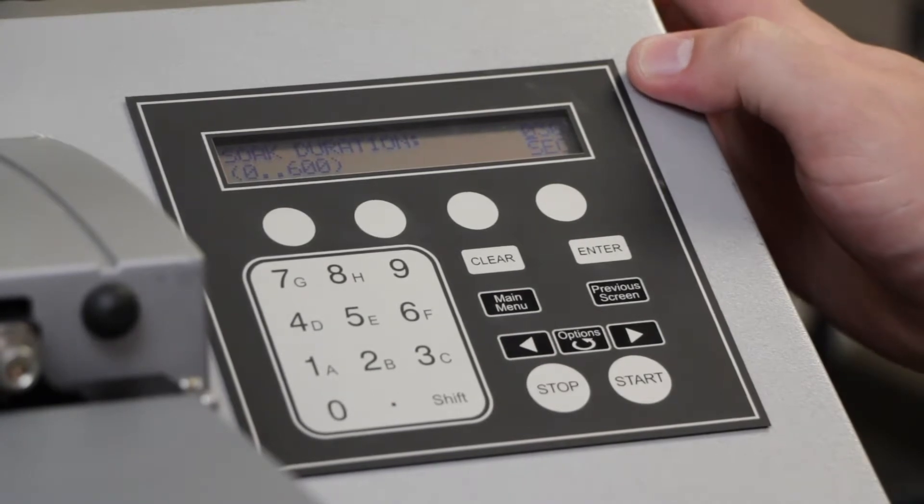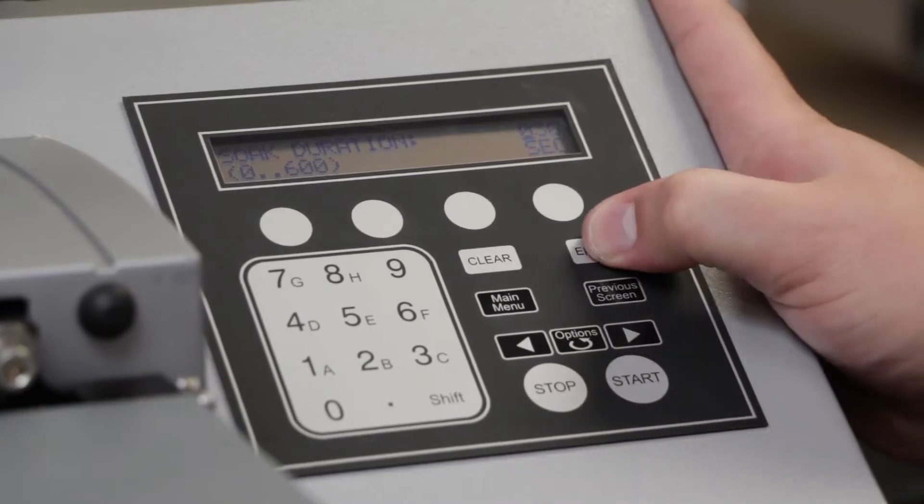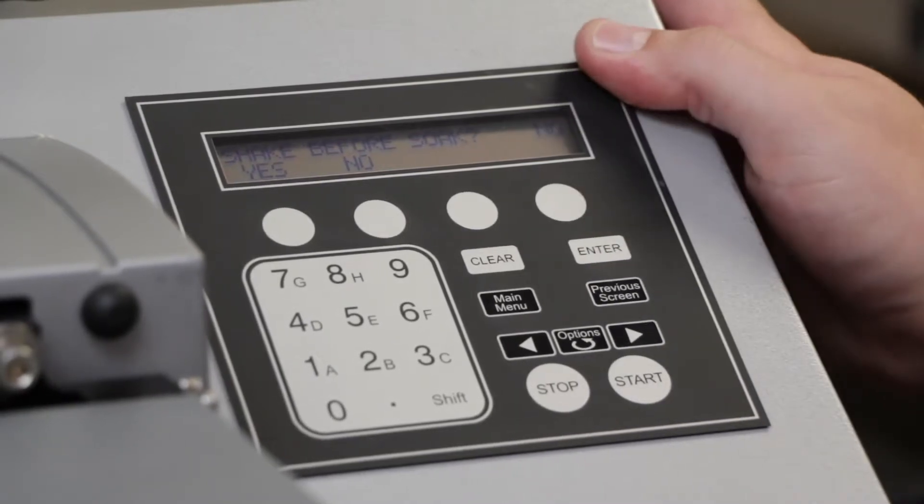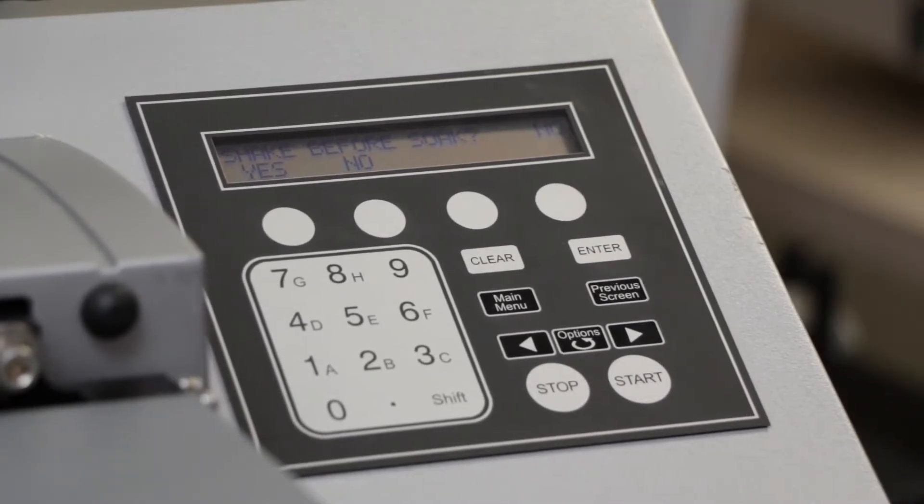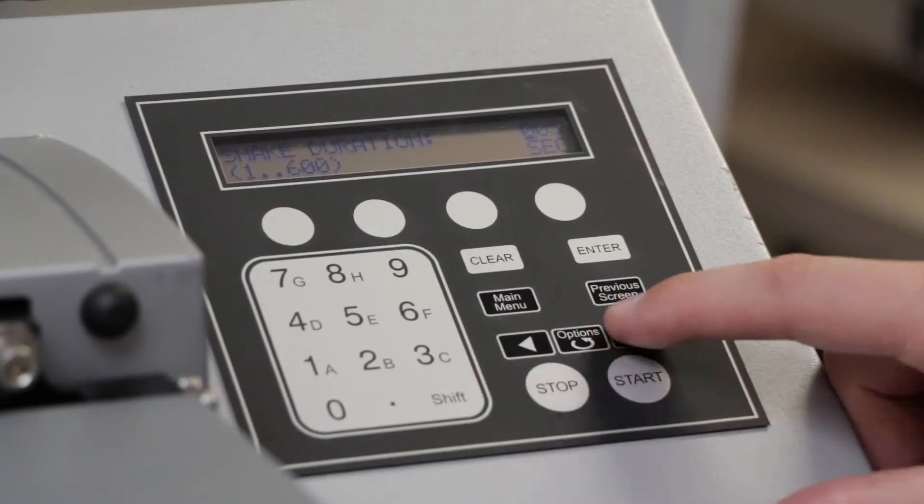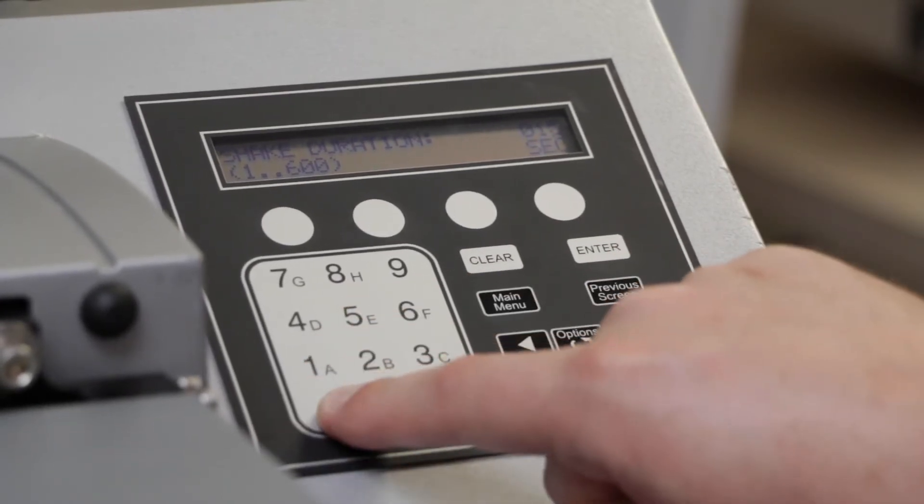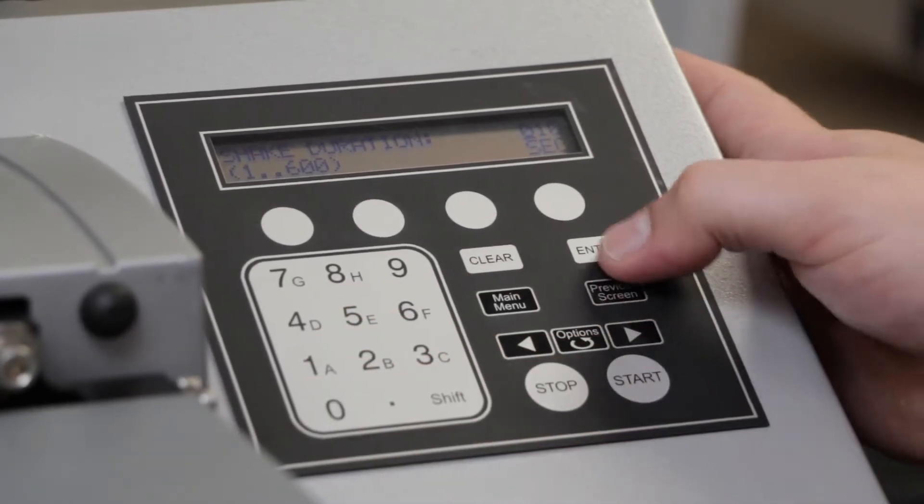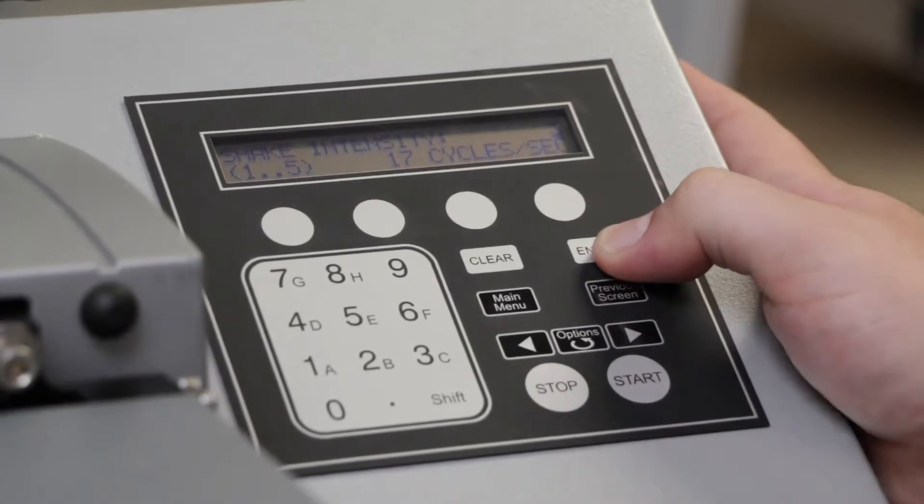For soak duration, we'll leave this at 30 seconds, but it can be anything from zero to 600 seconds. Shake before soak will cause the carrier to shake and help loosen up anything built up in the plate. We'll select Yes again. Set our shake duration, in this case 10 seconds, simply by entering on the keypad, pressing Enter to confirm, just like the other steps.